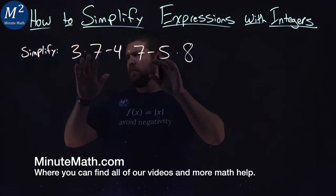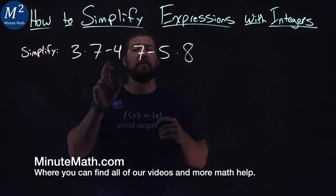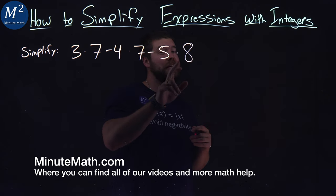We're given this larger problem. We have simplify 3 times 7 minus 4 times 7 minus 5 times 8.